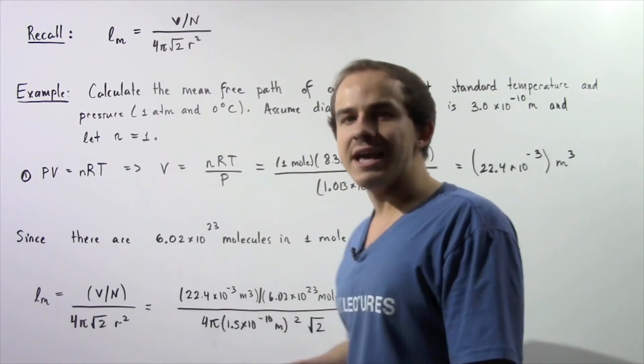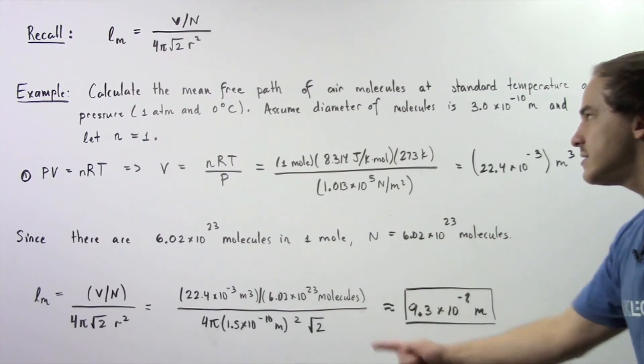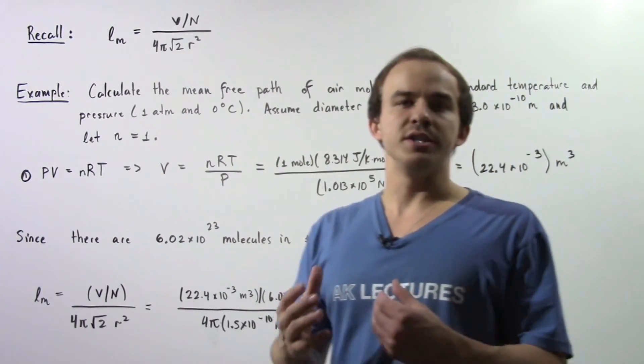This gives us an average distance of about 9.3×10⁻⁸ meters. So this is the average distance that our air molecules travel before they collide with one another.